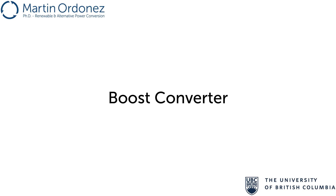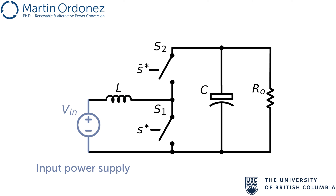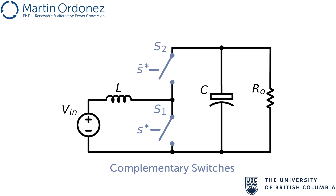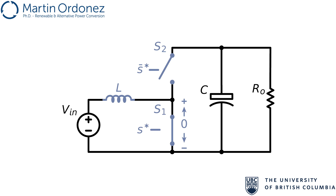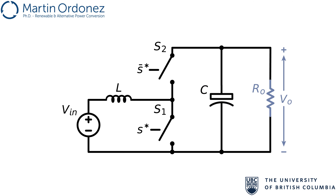The boost, or step-up converter, is a switch topology that takes a DC input voltage, VIN, and transforms it into a DC output voltage, VO, which is always larger than the input voltage. The circuit takes the input voltage source and uses two complementary switches, S1 and S2, to alternatively connect the inductor to either 0 volts by closing S1 and opening S2, or the output capacitor by opening S1 and closing S2. This creates a triangular current through the inductor. The output capacitor integrates this triangular current and produces an output voltage, VO, with minimal ripple applied to the load.